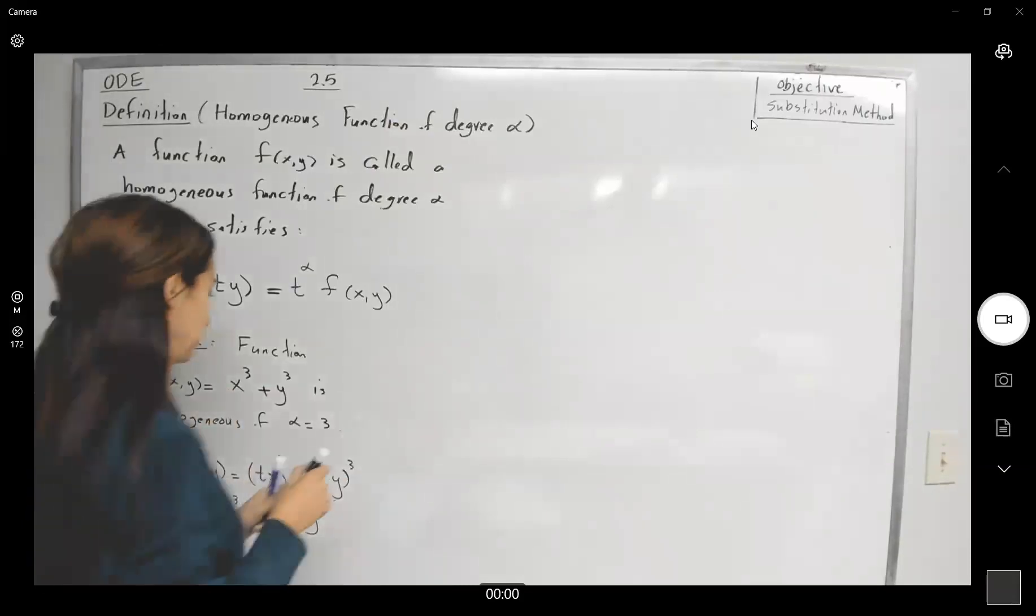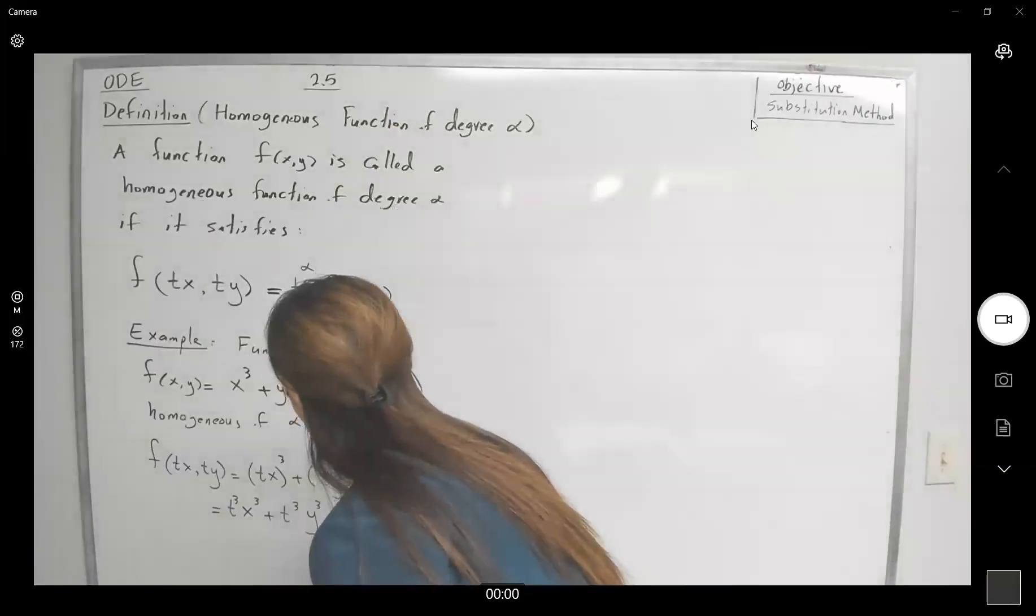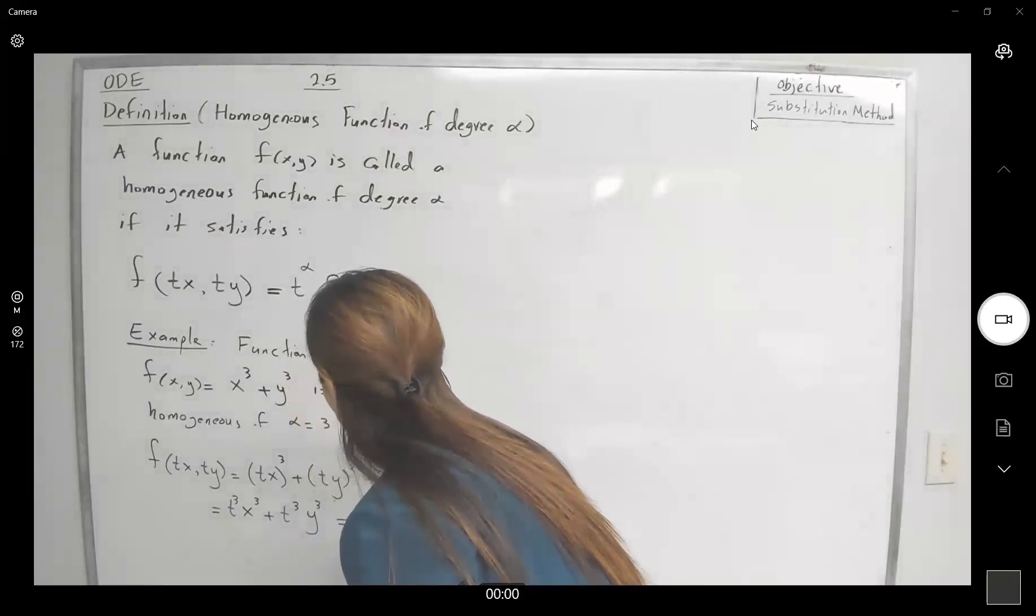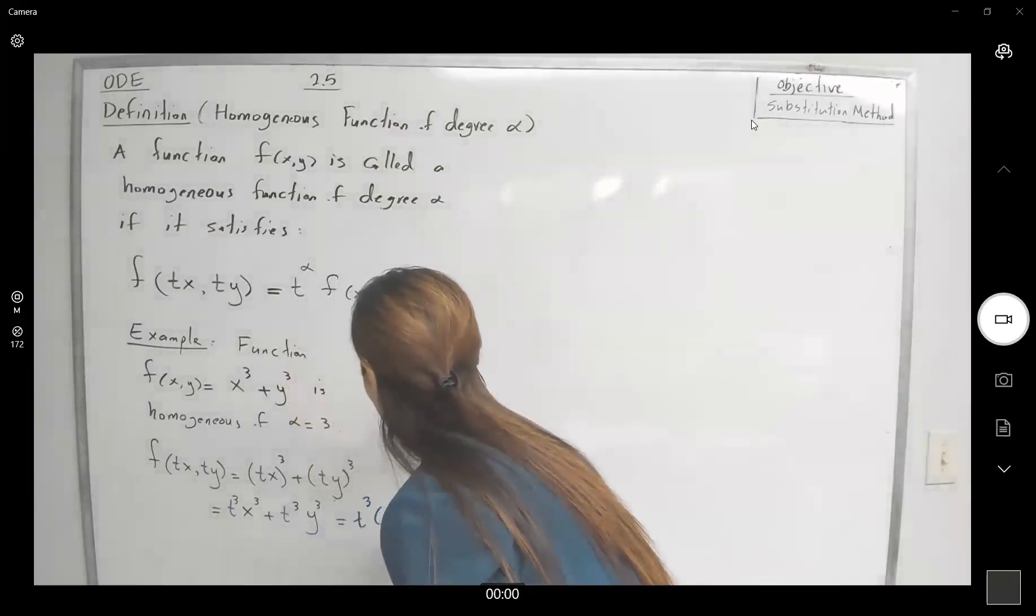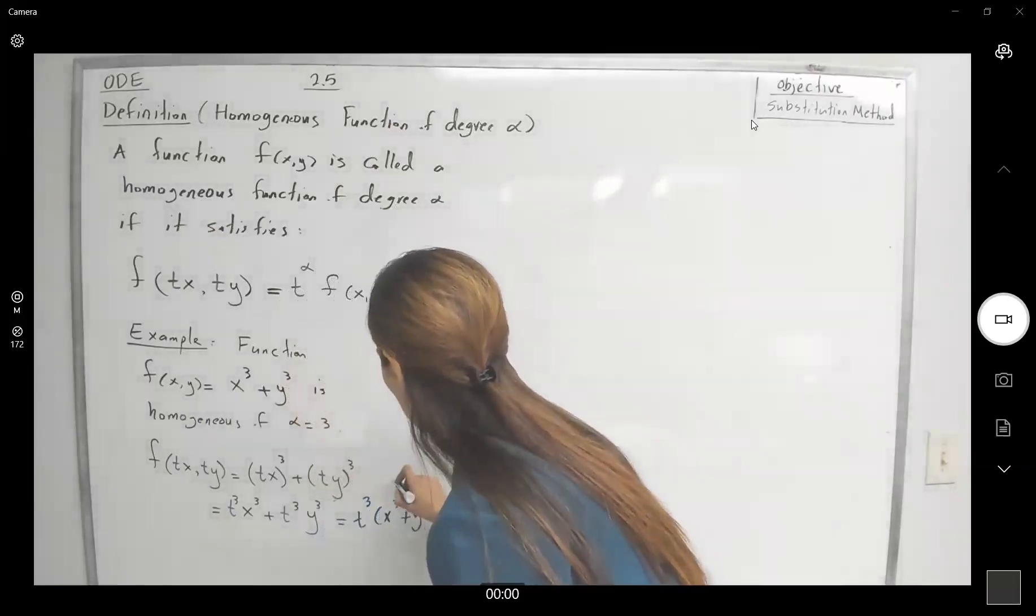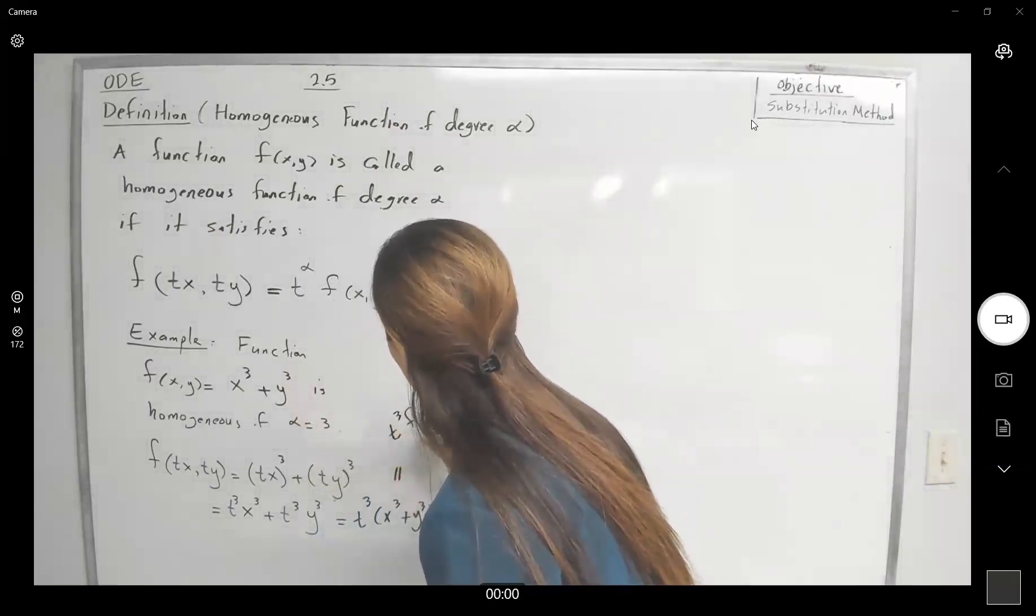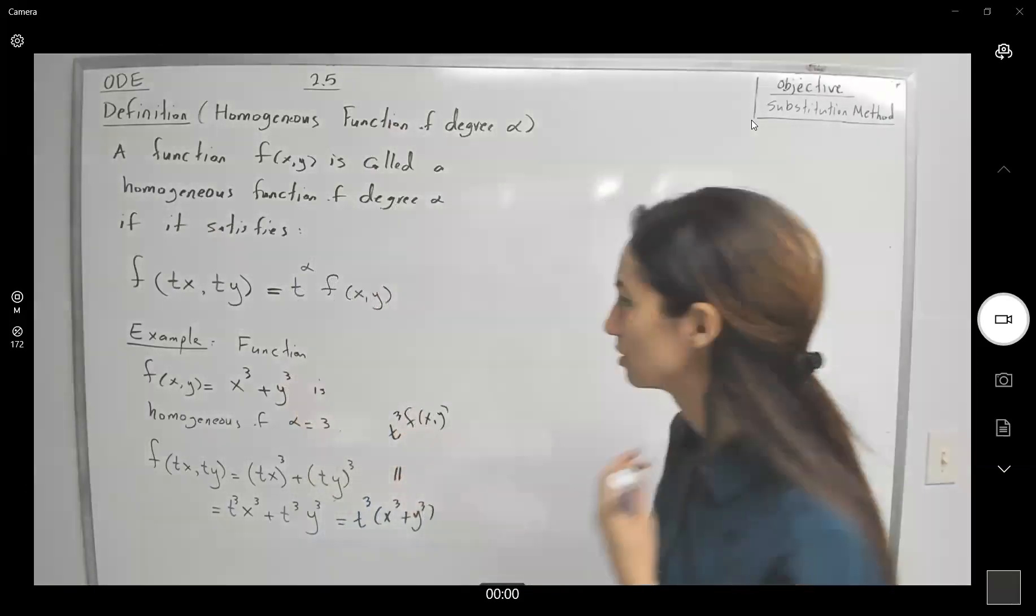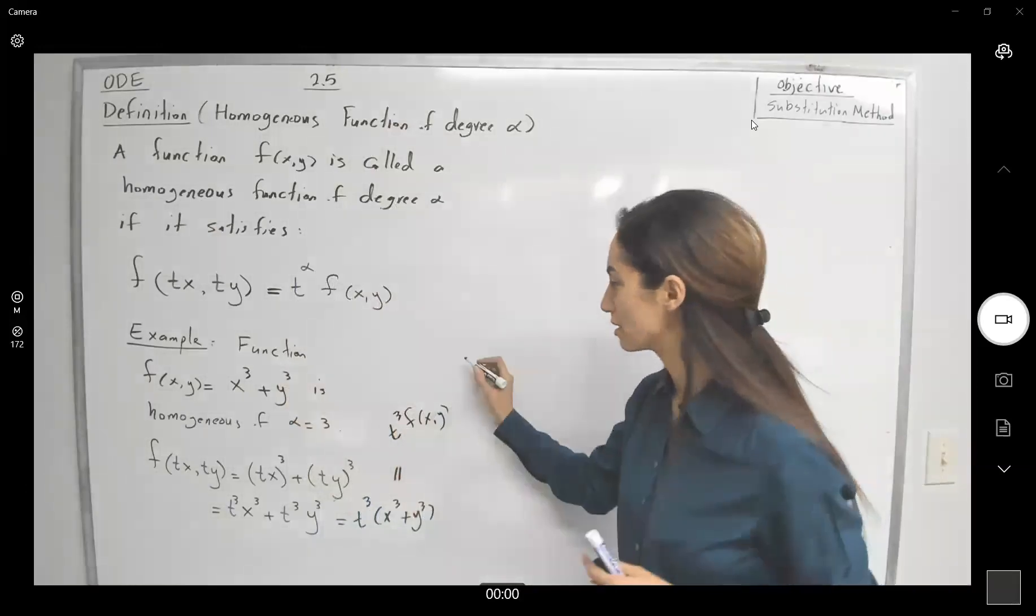And as you can see, you have t to the third times x cubed plus y cubed, which is just t to the third f(x,y). So the degree in this case is three.